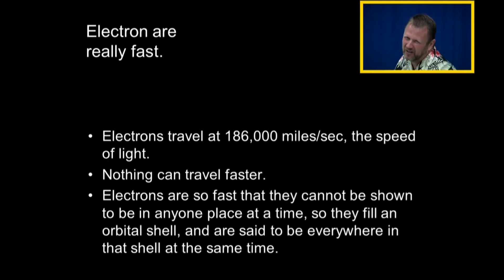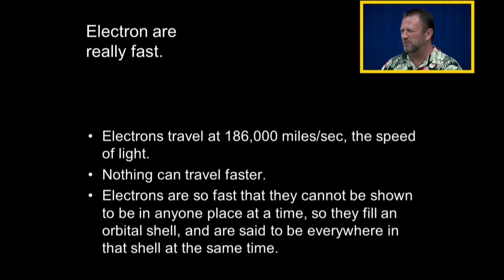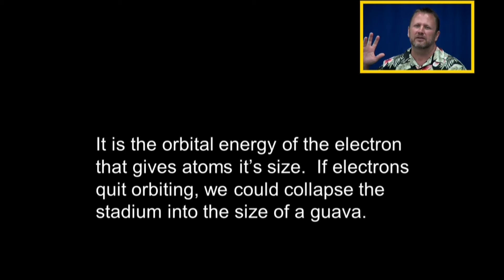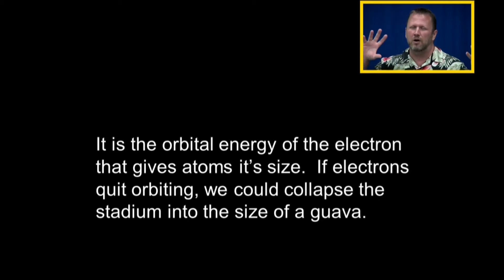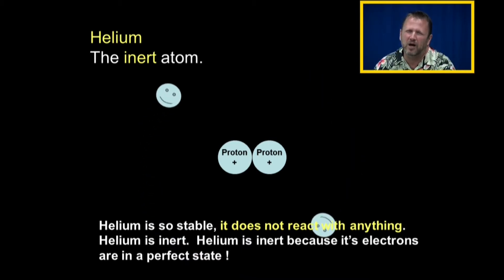Electrons are really, really, really fast — nothing can travel faster. Electrons are so fast they cannot be shown to be in any one place at any time; you can read about Heisenberg for more on that. They're said to fill an orbital shell; we say they're everywhere at the same time. Electrons travel at the speed of light. It is the orbital energy of the electron that gives the atom its size. If that electron quit orbiting, we could collapse something the size of a stadium into the size of a golf ball — that's why you read about black holes and giant stars compressed down to nothing. There's a lot of empty space that atoms take up.